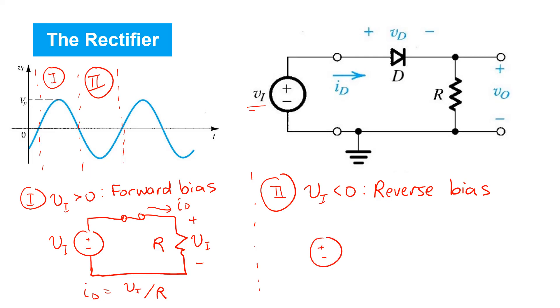That is, we saw that we can replace the diode with this idealized reverse bias model and open circuit.